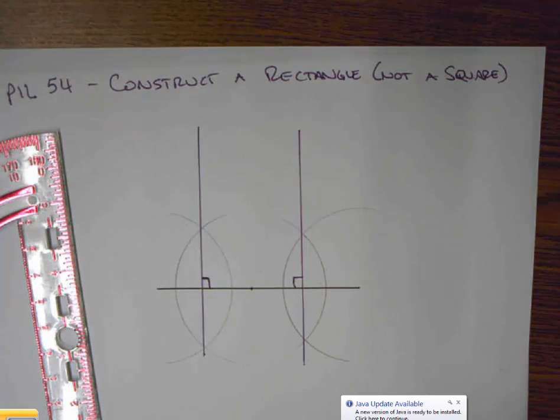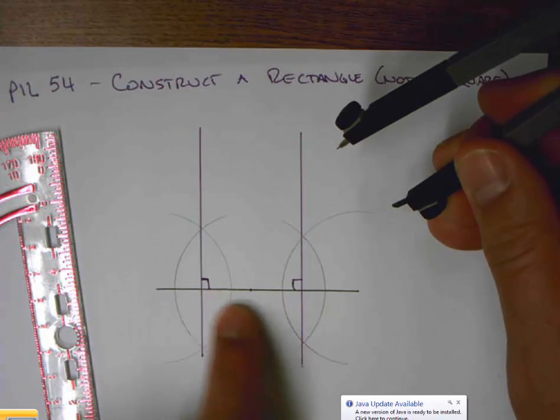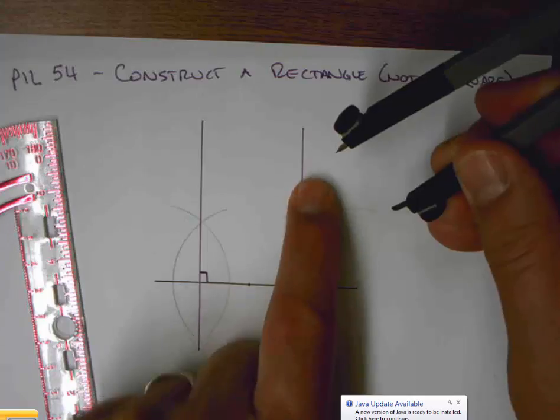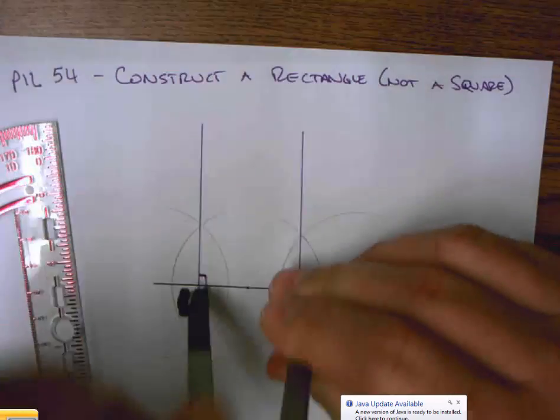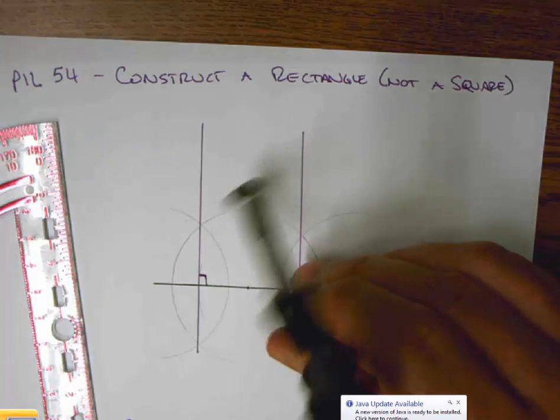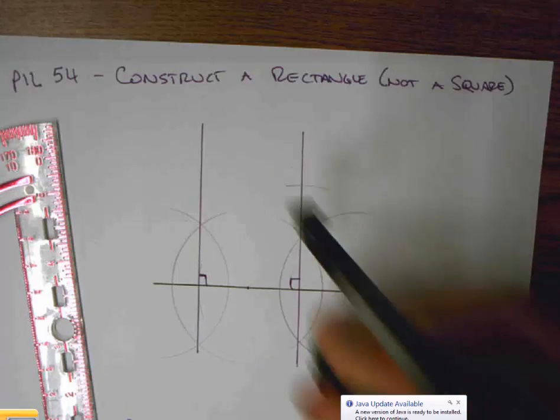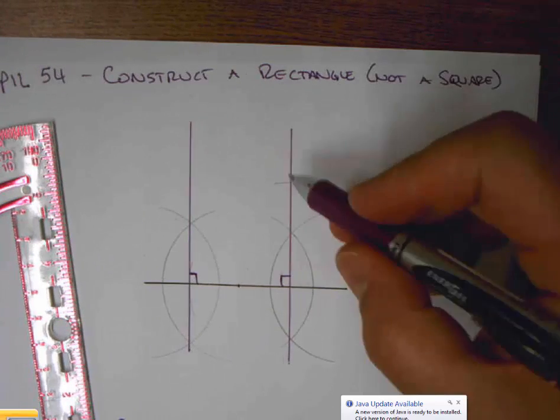And the trick is, if I want this to be a rectangle and not a square, well, what would make it a square is if this length were the same as this length. So to ensure that it's not a square, what I will do is measure this length. I would make it a square, make that notation up here, and I have to simply ensure that I go through some point that is not there.